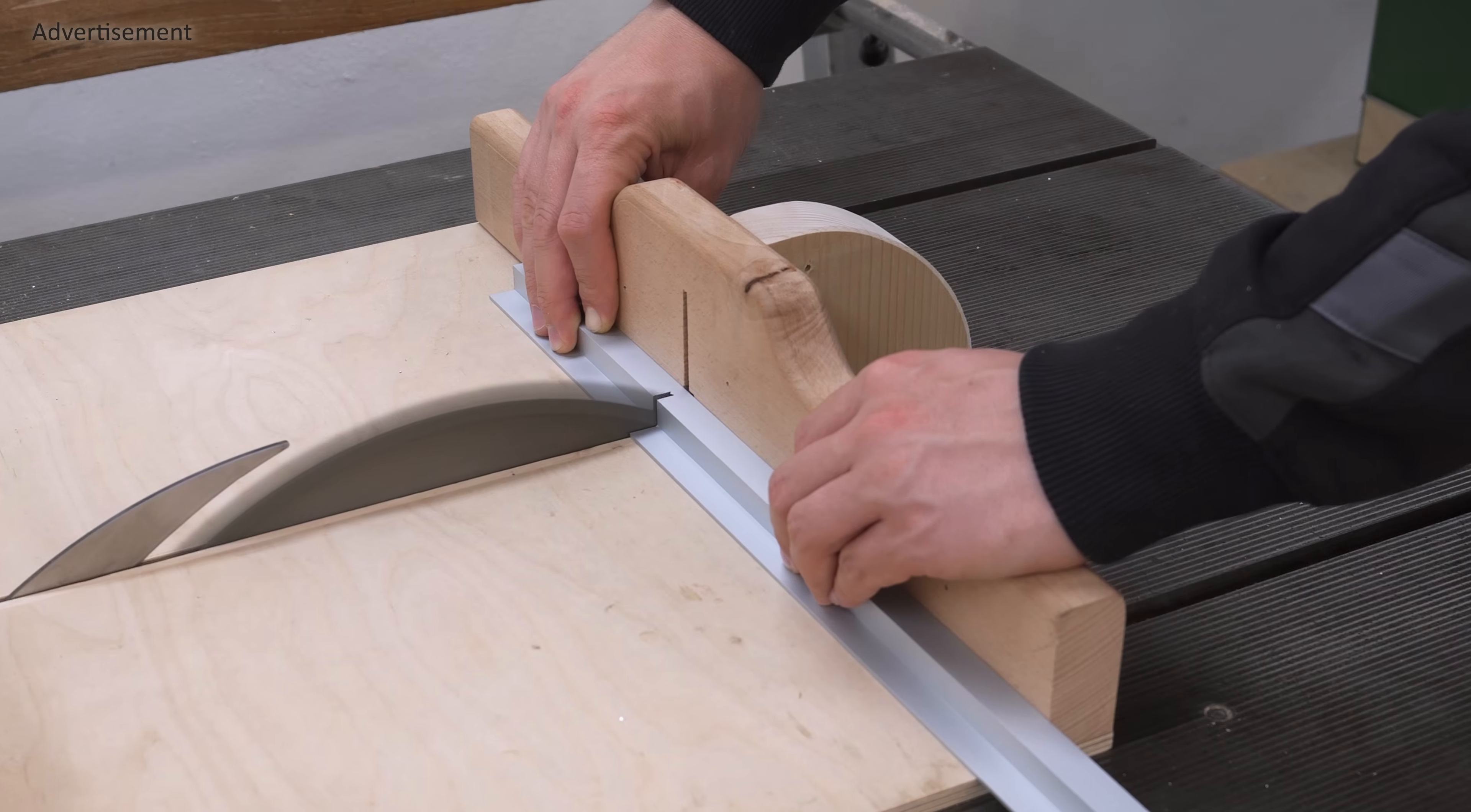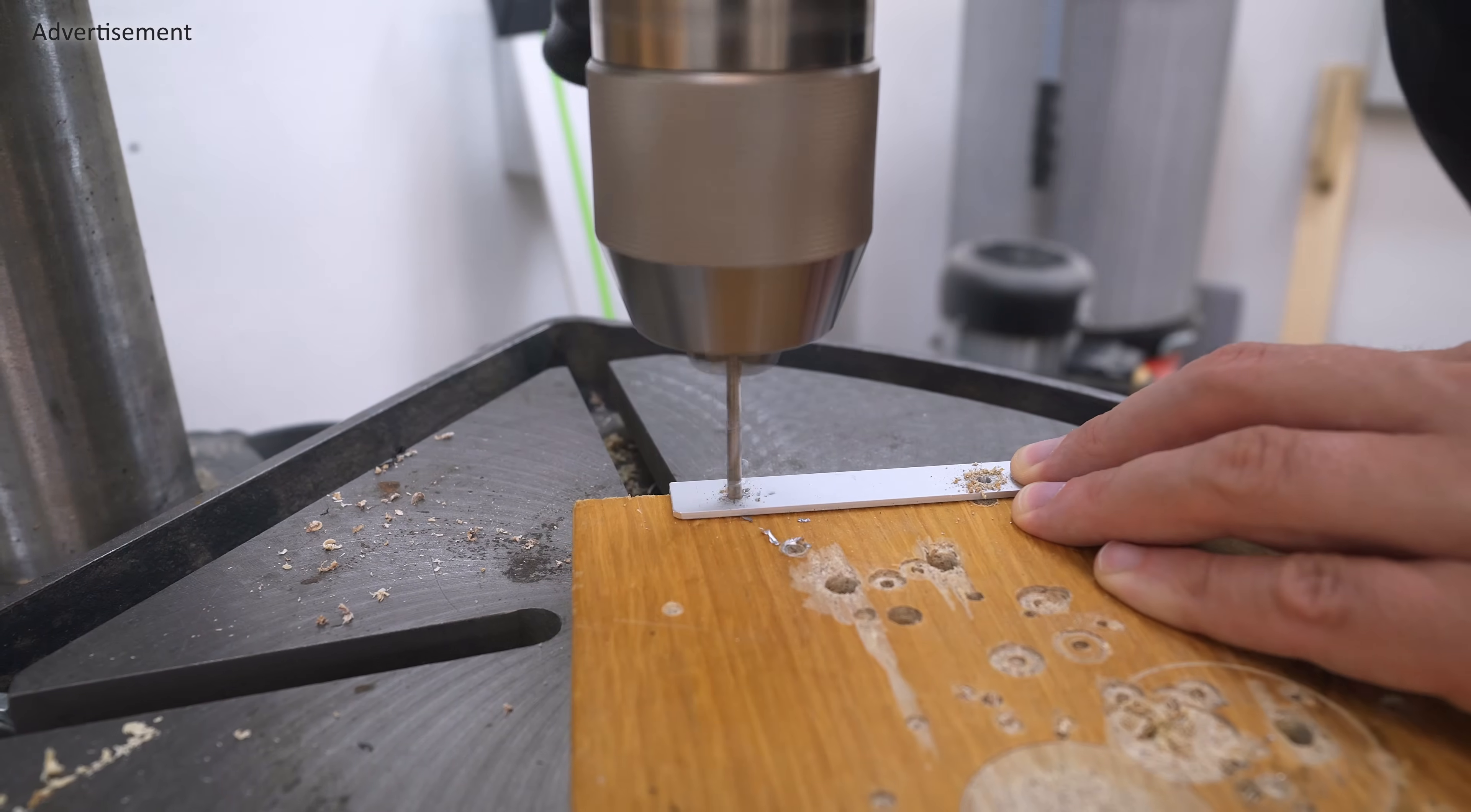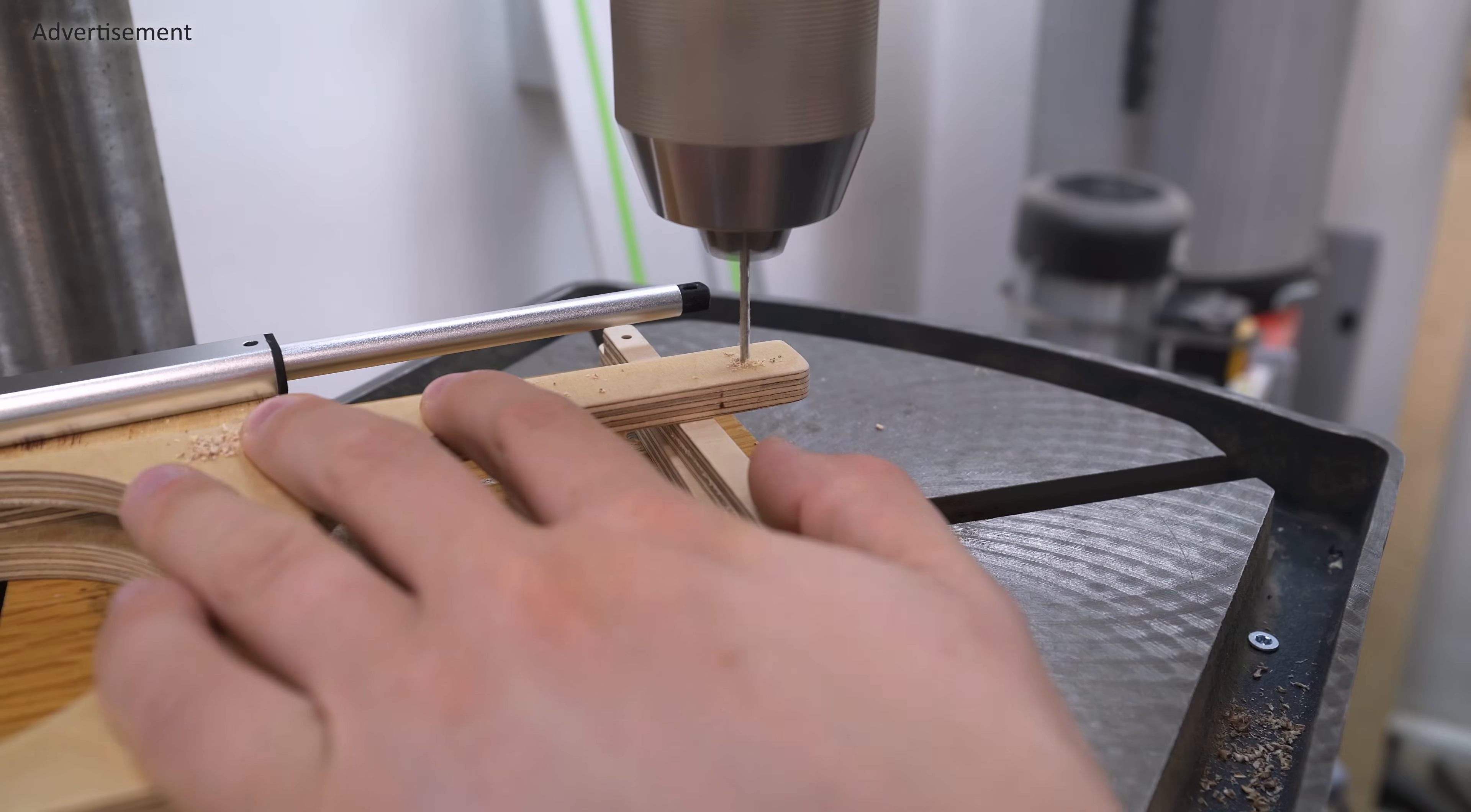This piece of aluminum is going to become a guard for the actuator to protect it against impacts and to keep dust from settling on it.